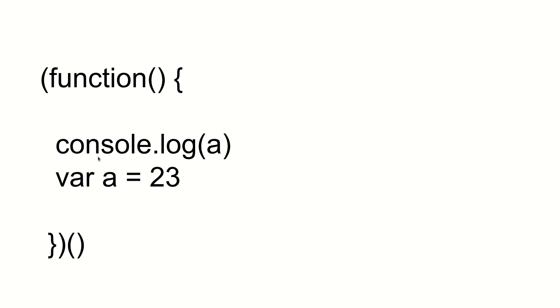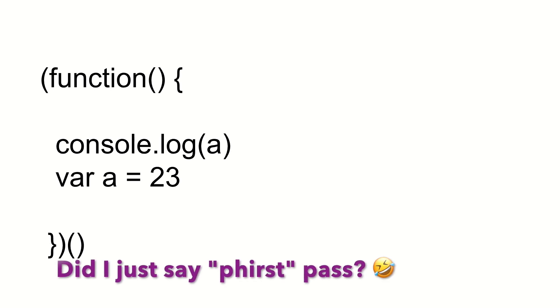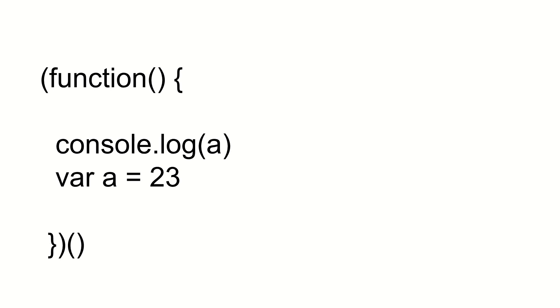The fundamental to understanding variable and function hoisting is to understand that in JavaScript any program executes in two phases. The first phase is the compilation phase — the compiler discovers all the variables and functions that have been defined and puts them on the local stack of the function. In phase two, it actually executes the remaining code as per the local variables.